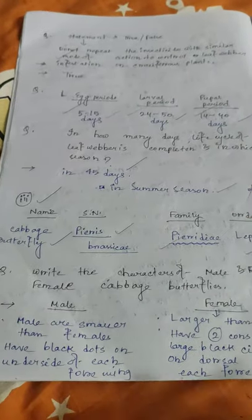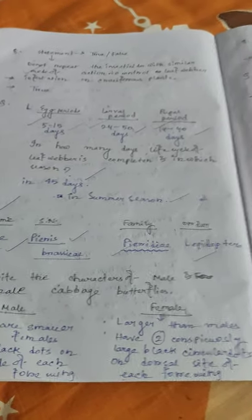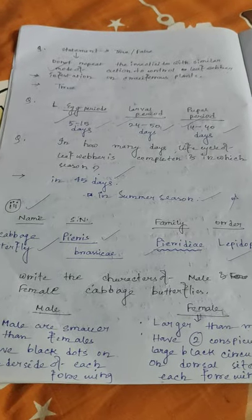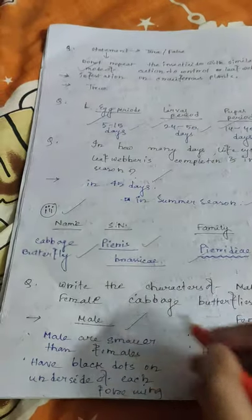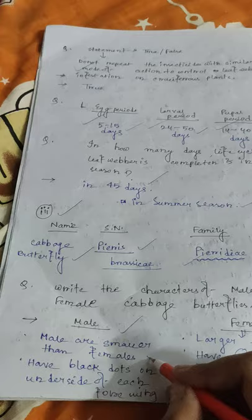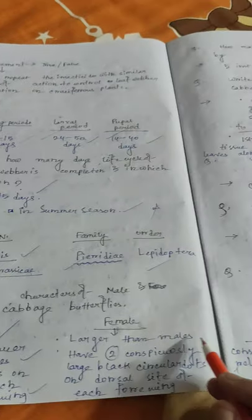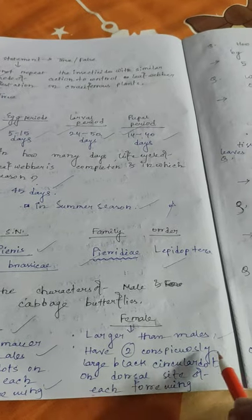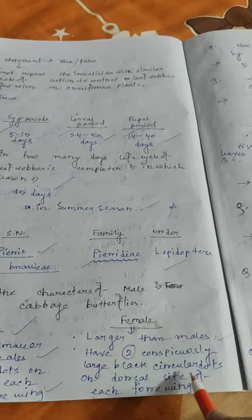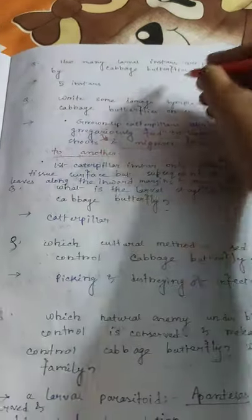Characters of male and female cabbage butterflies: males are smaller than females and have black dots on the underside of each forewing. Females are larger and have two conspicuously large black circular dots on the dorsal side of each forewing.